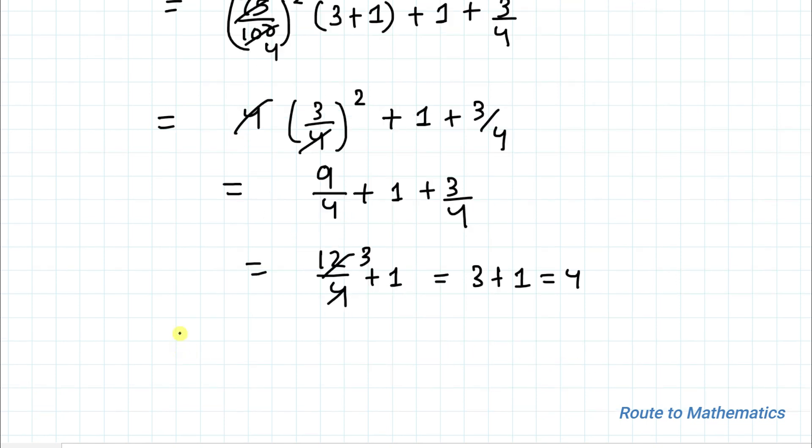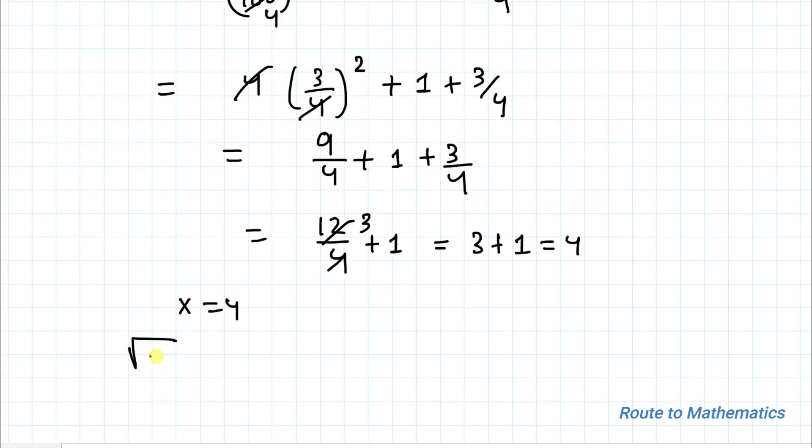So we are getting x equals to 4. What we asked to find the value of root under x that is root under 4 which equals to plus or minus 2 but the given value cannot be negative. So the answer is positive 2 is our answer.